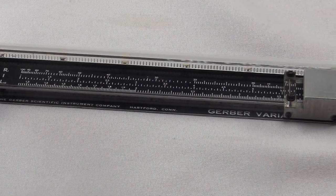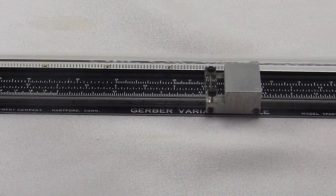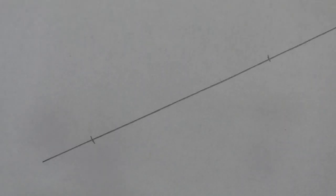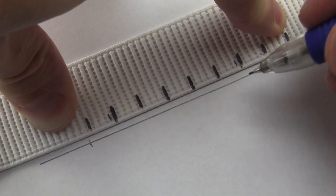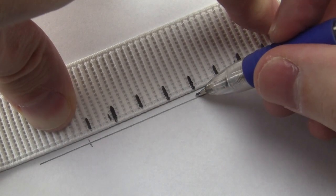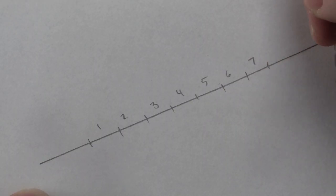Turns out the stretchy ruler has tons of different uses. I was kind of shocked at how many cute little problems this thing can solve. Like here, let's say I have this line on a piece of paper, and I want to make seven equal subdivisions. I just stretch it so that this whole distance is seven units on the ruler, and then I just mark off the divisions. Gerber!